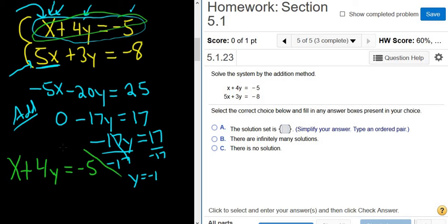So now we're going to put y here, so negative 1. So x plus 4 times negative 1 equals negative 5.